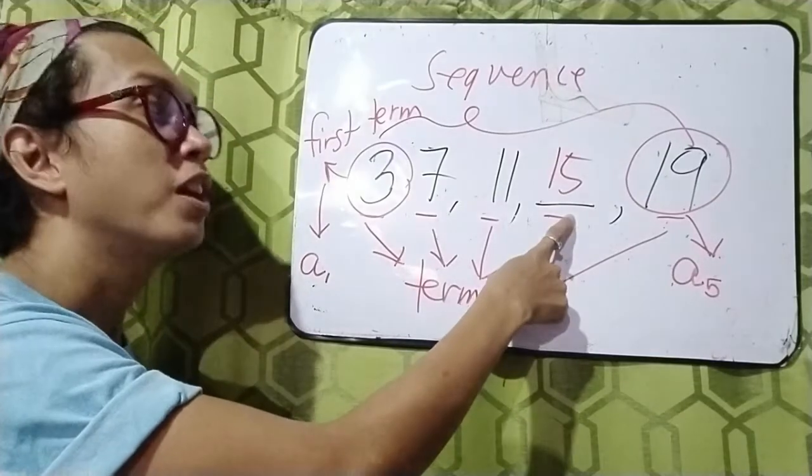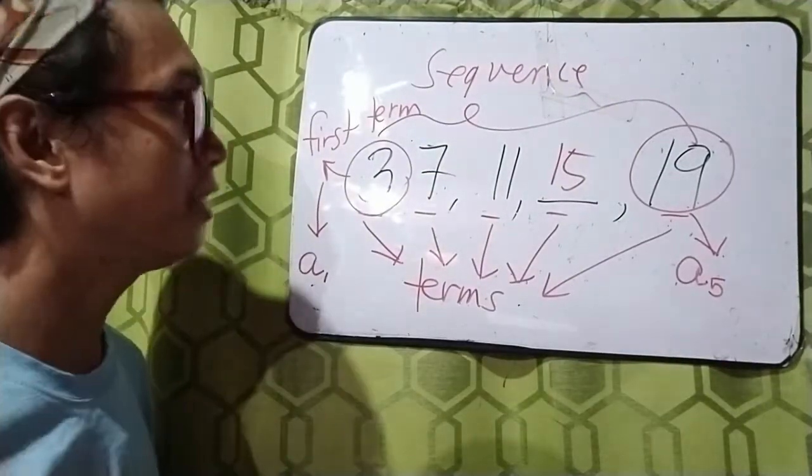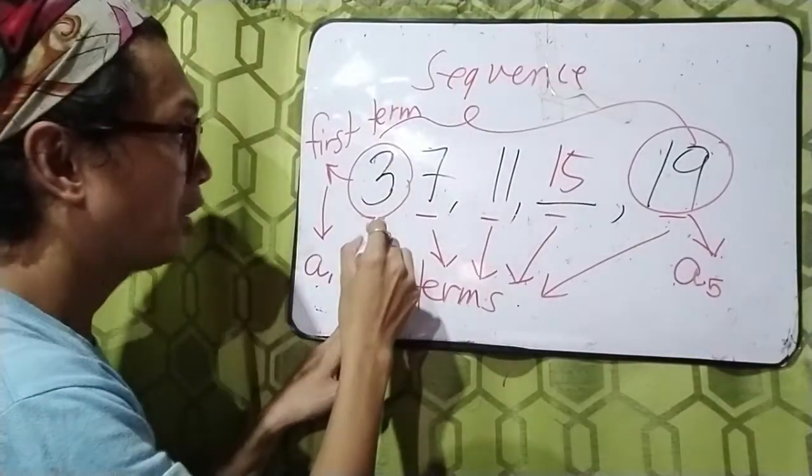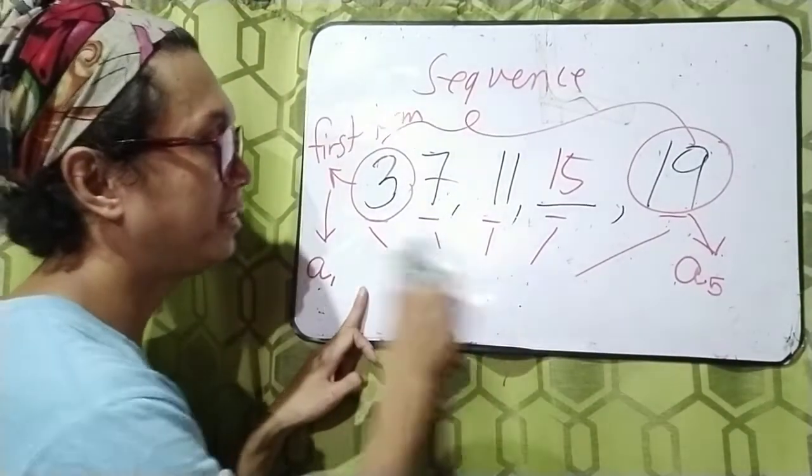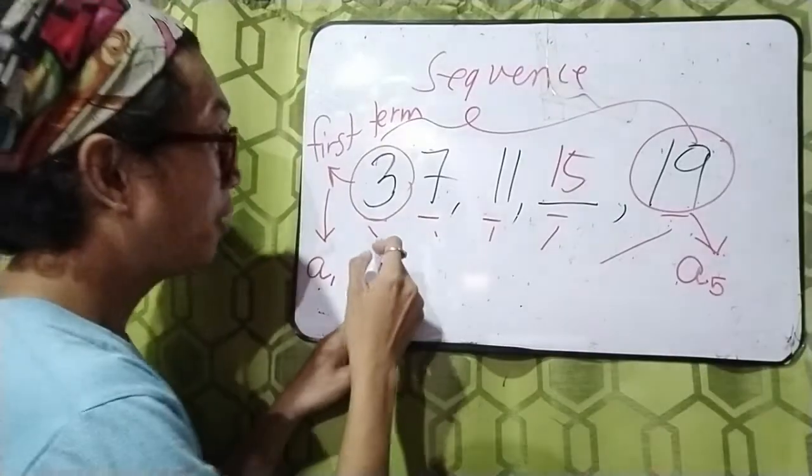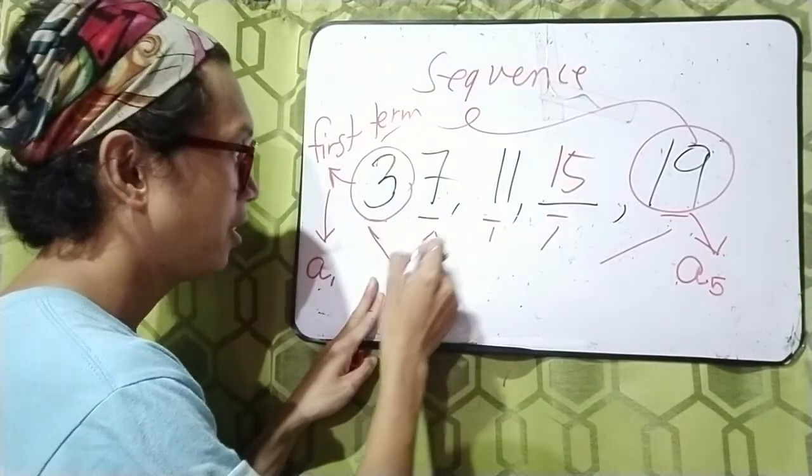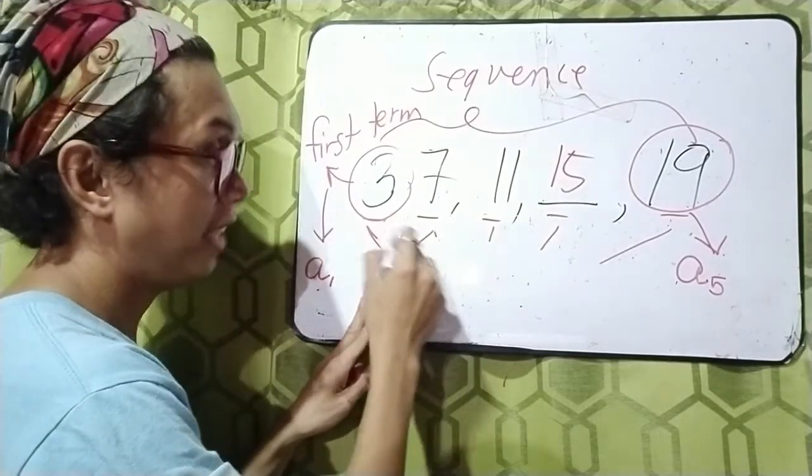So, how did you get 15? I think you have seen the pattern that you're going to. Can I erase this? I think you have already taken down notes.